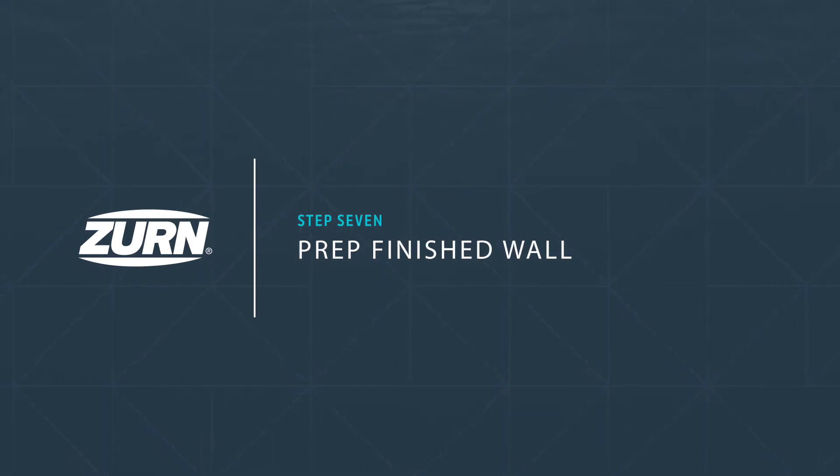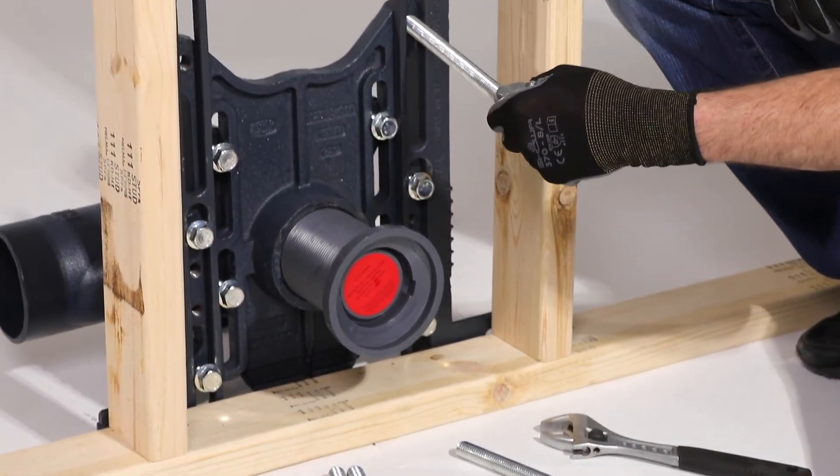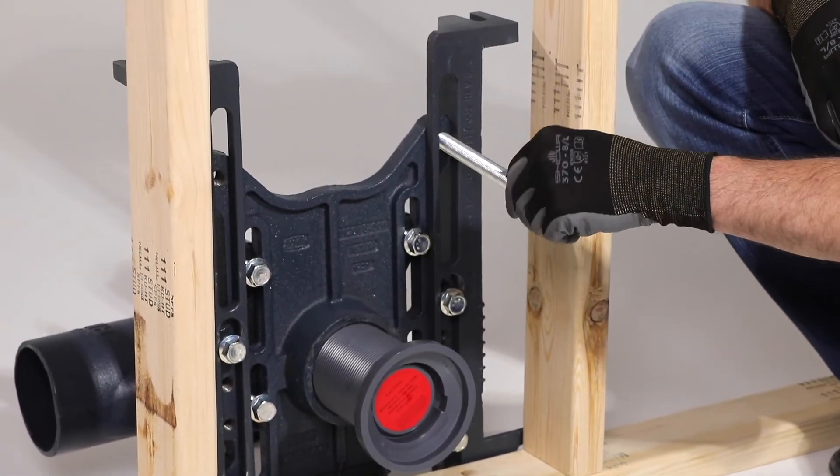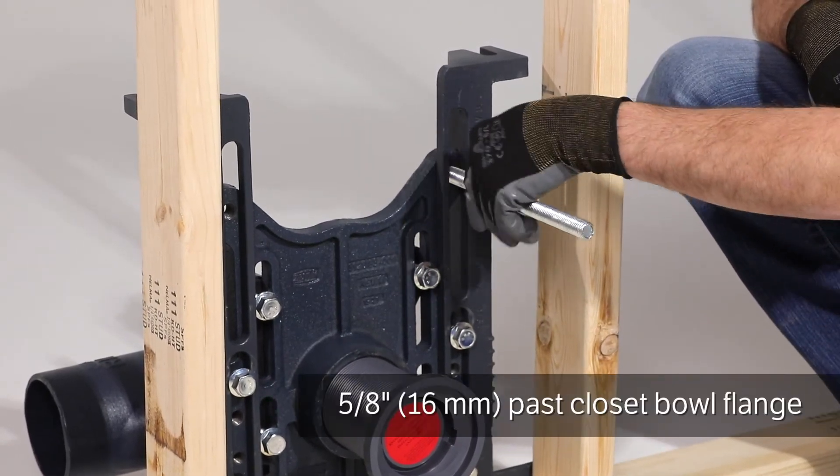Step seven: prep the finished wall. Now grab your finish bag. Fasten the four threaded rods into the faceplate until each rod extends five-eighths of an inch past the closet bowl flange.